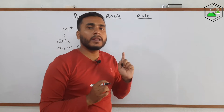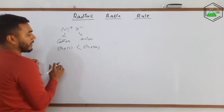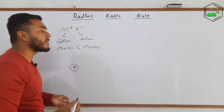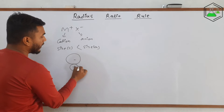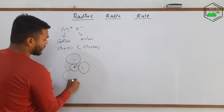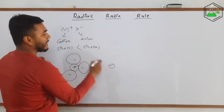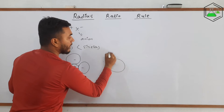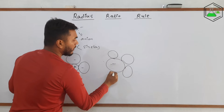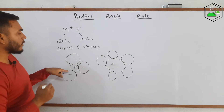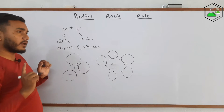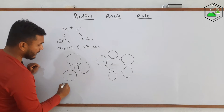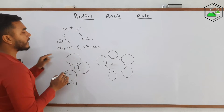Their size actually helps us to predict the coordination number. Suppose we have a cation — this cation will be stable if it is surrounded by negatively charged ions. It will likely get surrounded by negatively charged ions like this. Similarly, the negative ion X⁻ will likely get surrounded by positive ions. The coordination number is the number of ions surrounding the positively charged ion. Here, the coordination number of this cation is 3, because it has 3 anions around it.